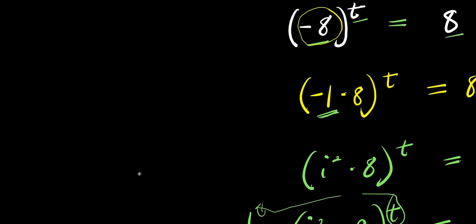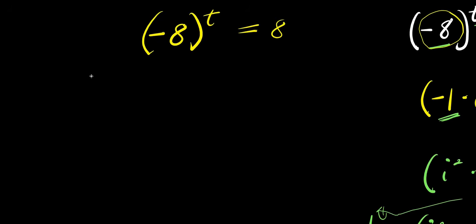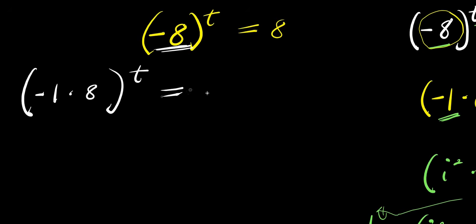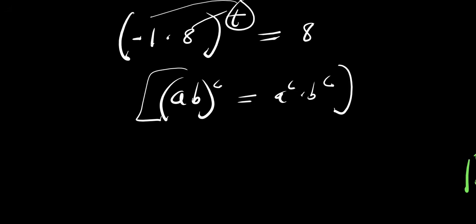Now we are going to copy the same question: negative 8 to the power T equals 8 — this is method two. We are still going to express negative 8 as the product of negative 1 and 8. So we have negative 1 times 8, raised to the power T, equals 8. Using the property (A times B) to the power C equals A to the power C times B to the power C, I distribute T to each term, giving negative 1 to the power T times 8 to the power T equals 8.